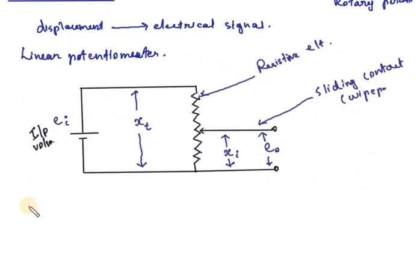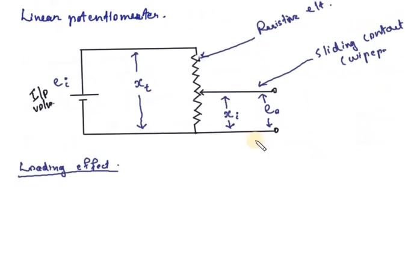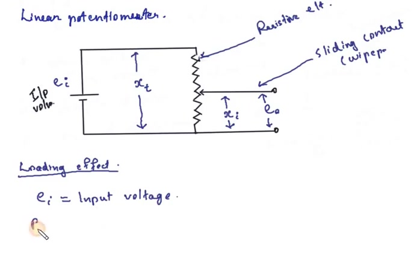Let's see the loading effect of the potentiometer. Here we have to derive some equations. So let's familiarize ourselves with the terms once again. EI is the input voltage, and RP is the total resistance of this potentiometer, which is measured in ohms.